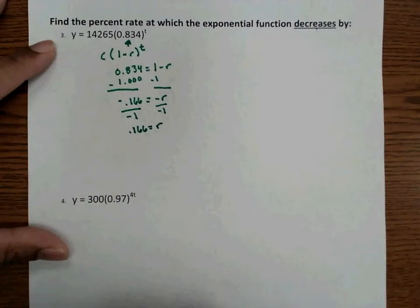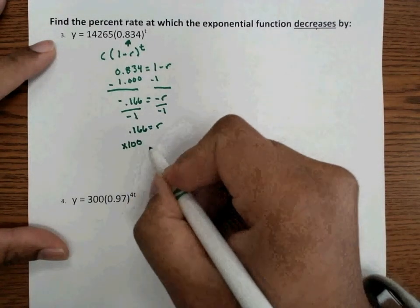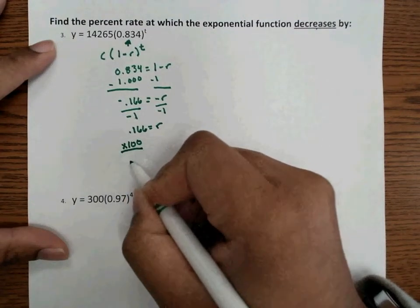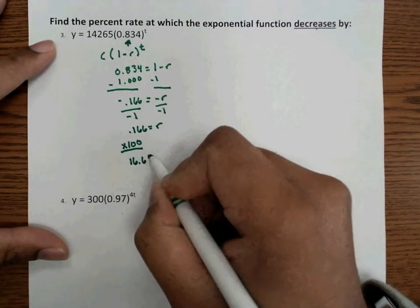And we get a positive 0.166 is equal to r. And so to find our percent rate, we have to multiply it times 100. And so we'll get 16.6% would be our percent rate.